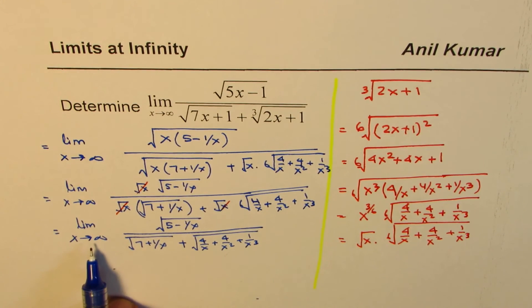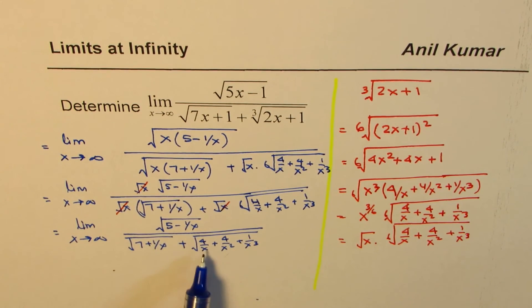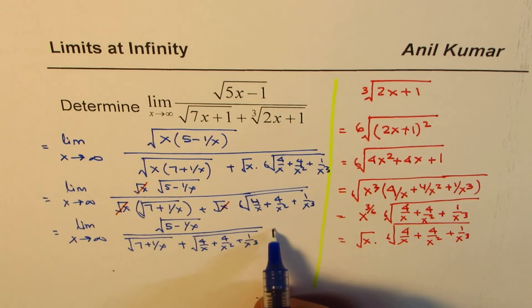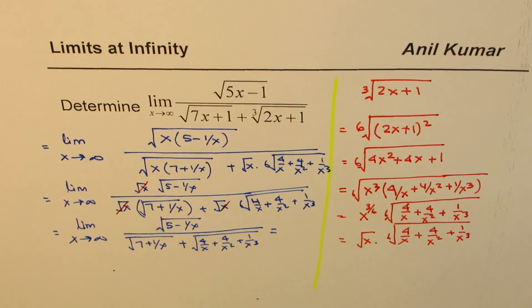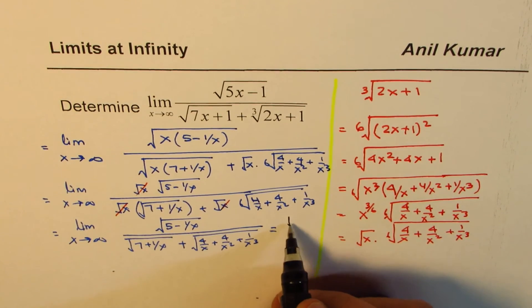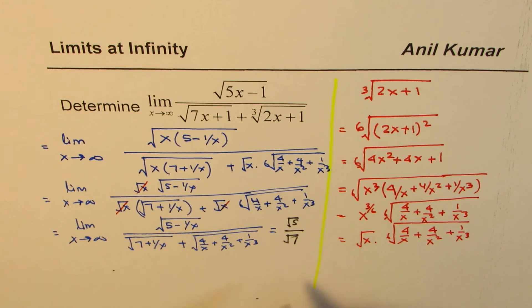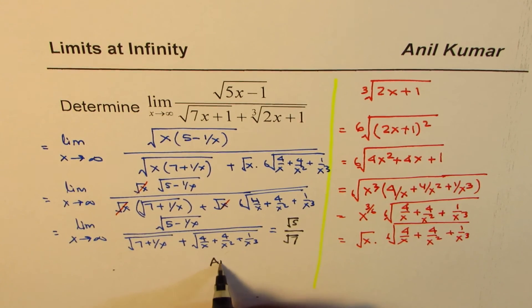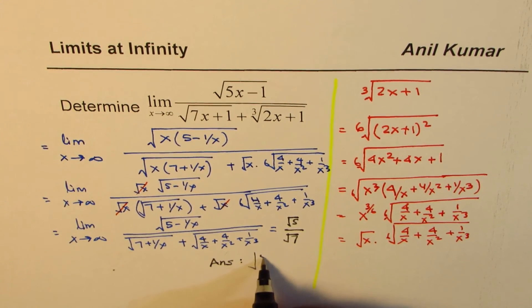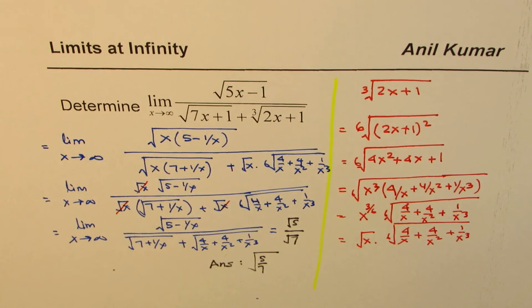Now, as x approaches infinity, these terms approach 0. So what are you left with? We are left with square root of 5 divided by square root of 7. So that is our answer. So our answer is square root of 5 over 7. Does it make sense to you?